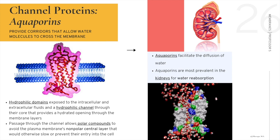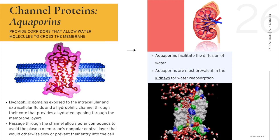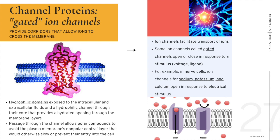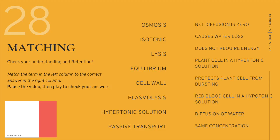Aquaporins are most prevalent in the kidneys for water reabsorption and help maintain fluid homeostasis in several tissues including the kidney, lung, GI tract, and brain. Another type of channel protein is the gated ion channel, which facilitates transport of ions and can open or close in response to a particular stimulus such as voltage or ligand binding. A prime example is in nerve cells, where sodium ion channels open in response to electrical stimulus to conduct an action potential.